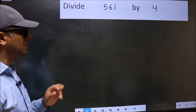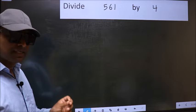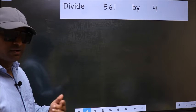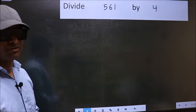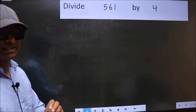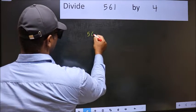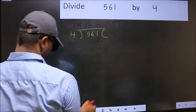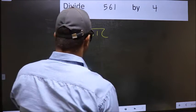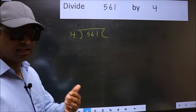Divide 561 by 4. While doing this division, many do this mistake. What is the mistake that they do? I will let you know. But before that, we should frame it in this way. 561 and 4 here. This is your step 1.